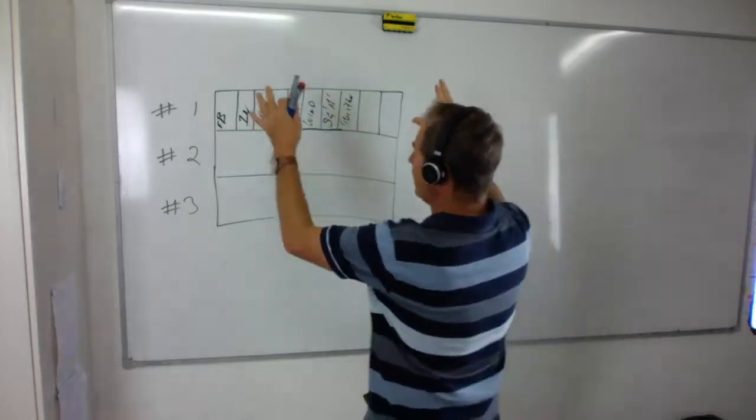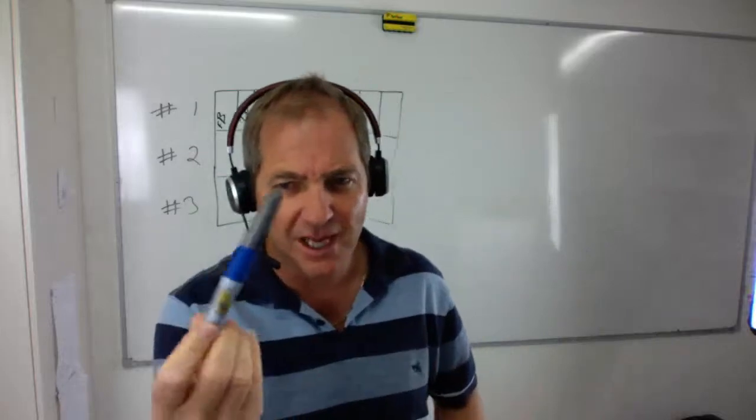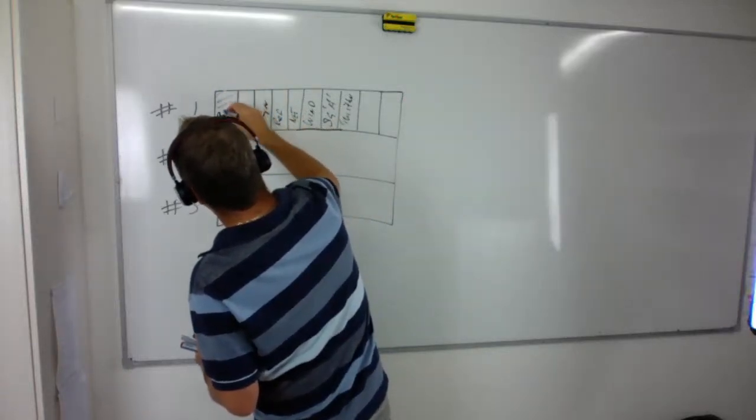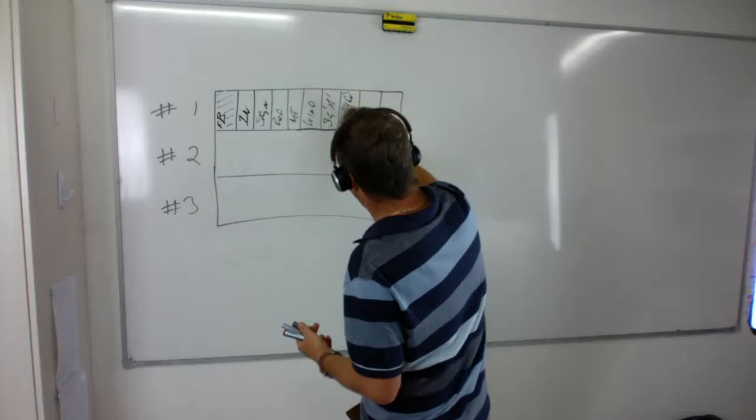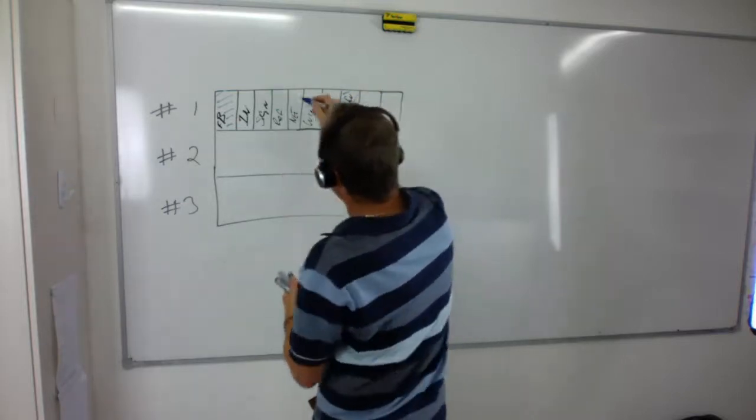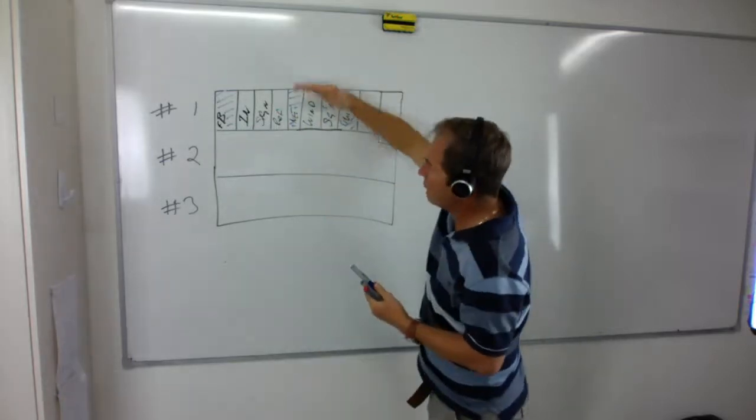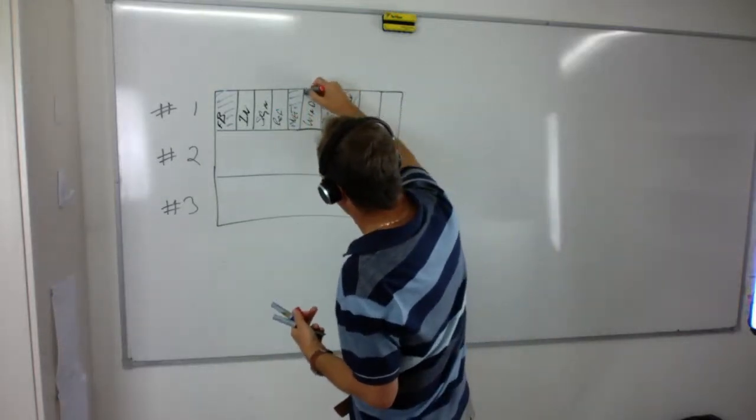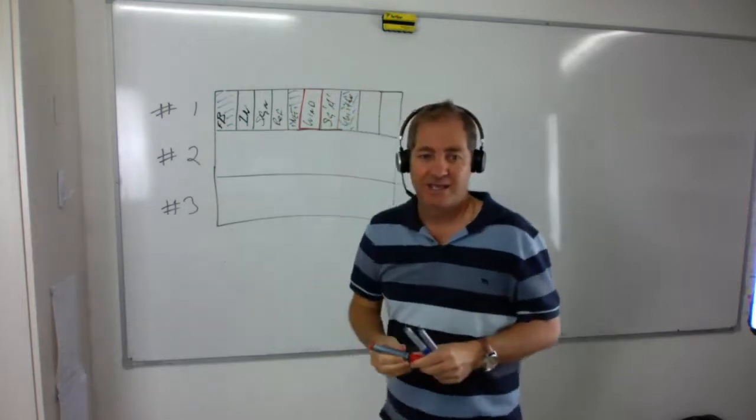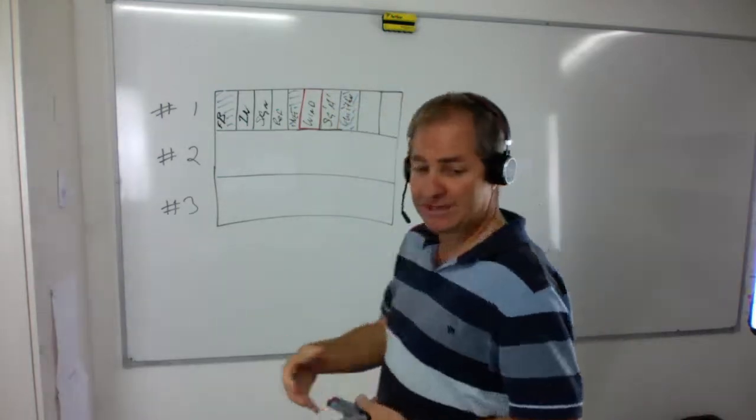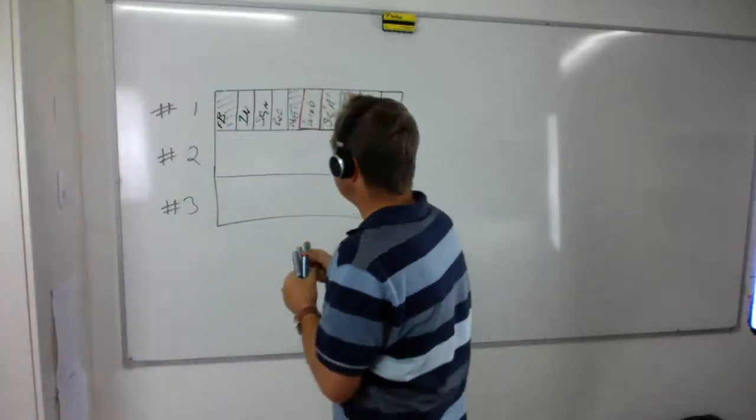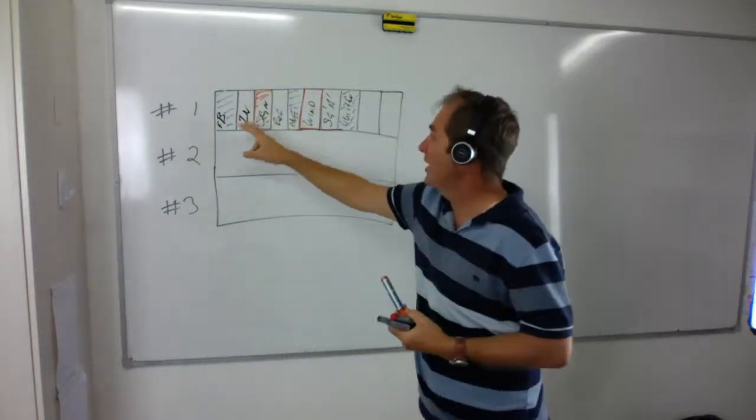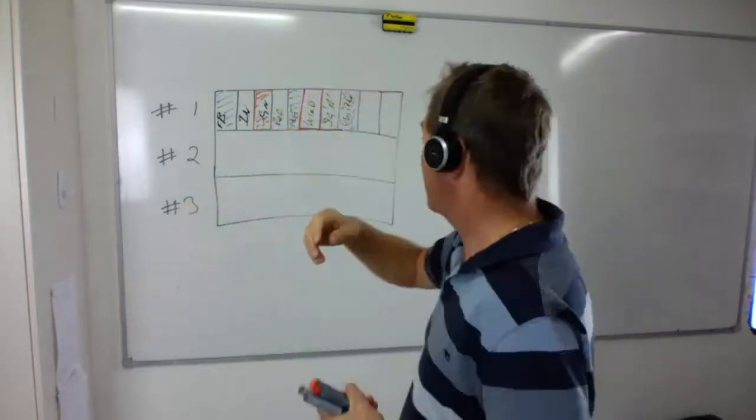Now, what you need to know is which one of these are working and which one are not. For example, we're going to pretend this blue pen is green. And if you know you're getting clients from Facebook, color it in. If they're coming in from Twitter, color it in.